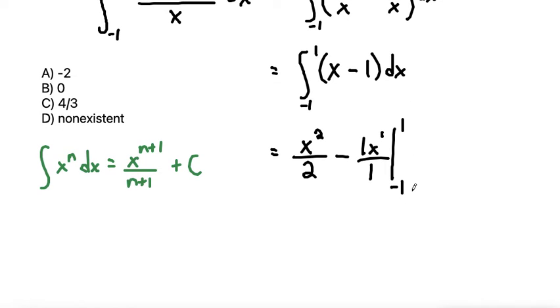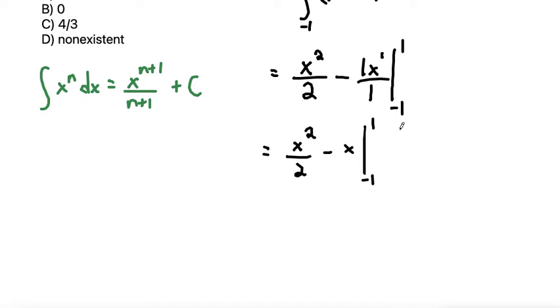And simplifying, we can make this x squared over 2 minus, we don't have to write all these ones, so it would just be minus x evaluated from negative 1 to 1. From here for our definite integral, we can plug in, we start by plugging in the top number, 4, so that makes,